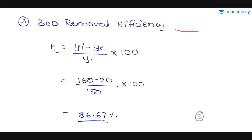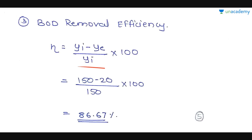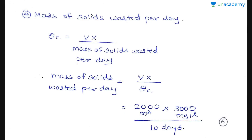The next parameter is BOD removal efficiency, denoted as E. Its formula is E = (Yi − Ye) / Yi × 100. Substituting: (150 − 20) / 150 × 100 = 86.67%. So the BOD removal efficiency is 86.67%.